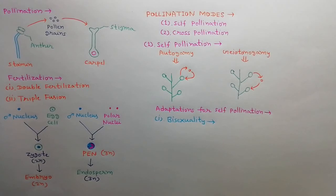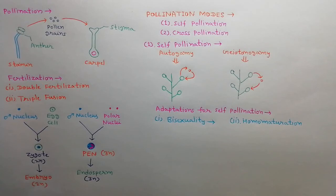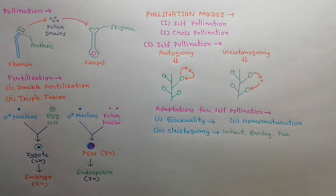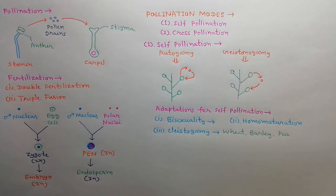But most self-pollinated plants have bisexual flowers. The second adaptation is homo-maturation: in a bisexual flower, both stamens and carpels mature at the same time. The third adaptation is cleistogamy: in some plants, flowers remain always in closed condition and never open, hence showing 100% self-pollination — such as Grossera, Oxalis, wheat, garden pea, barley, etc.